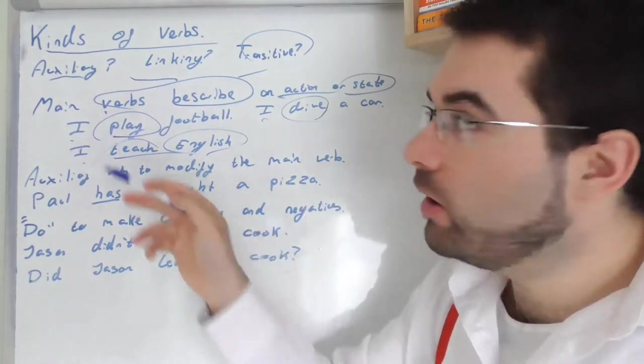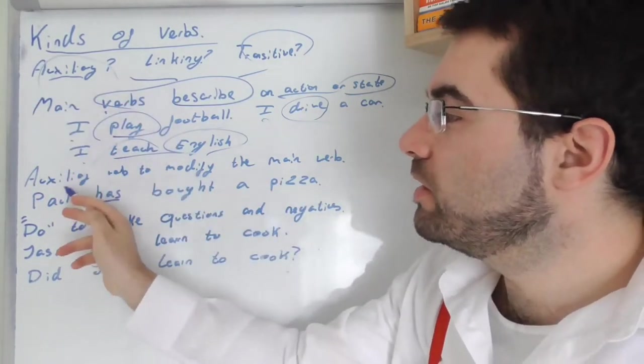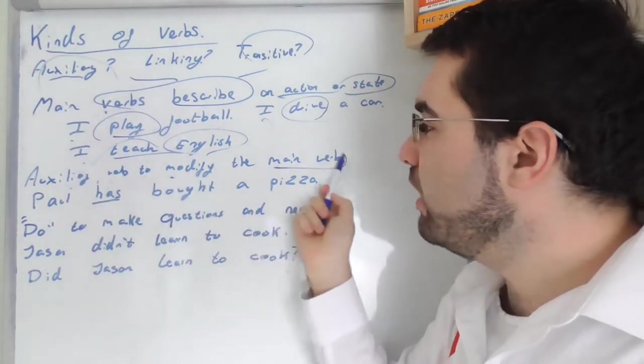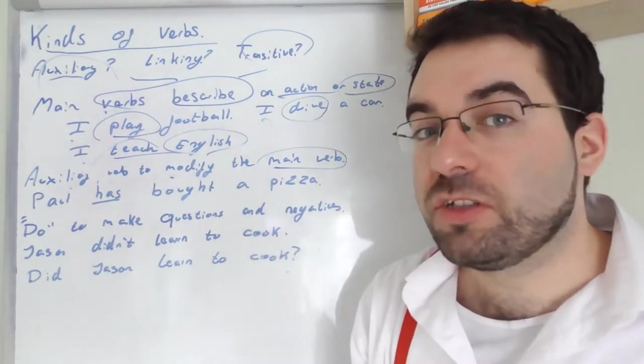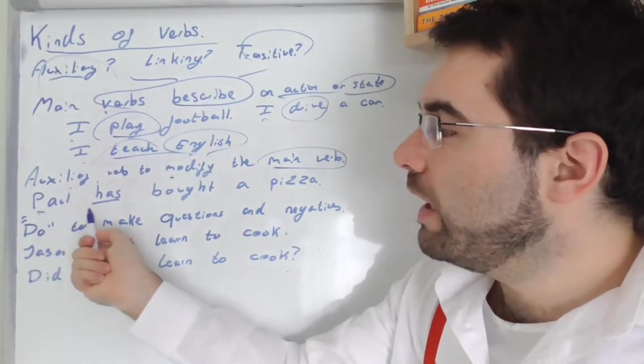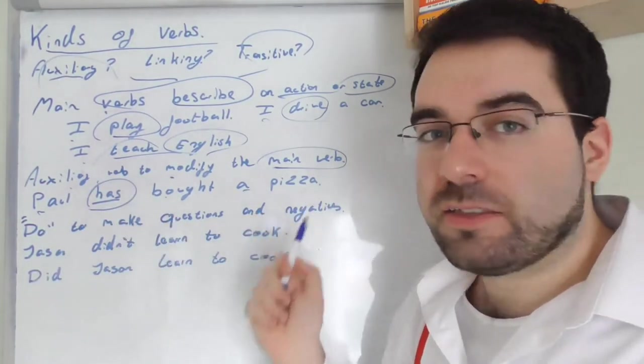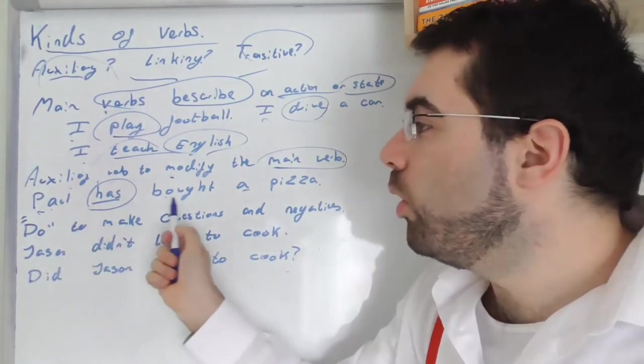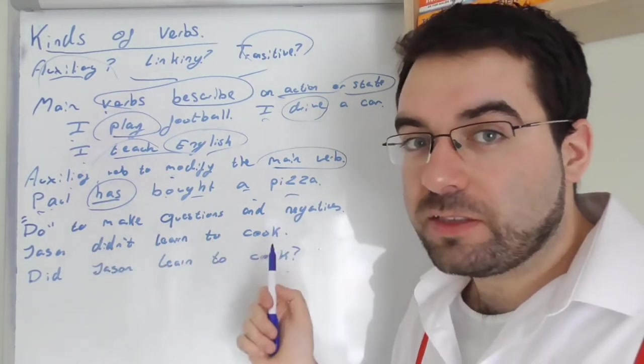But then we have the auxiliary verb. Auxiliary verb that modifies the main verb, changes the verb, gives the sentence more detail. Paul has bought a pizza. Paul bought a pizza. Paul has bought a pizza.